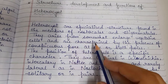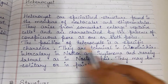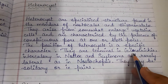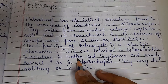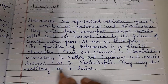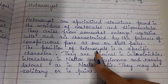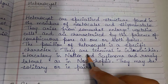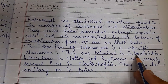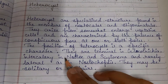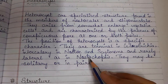The position of the heterocyst is a specific character. They are terminal in Gloeotrichia, intercalary in Nostoc and Scytonema, and lateral in Stigonema. The position is thus a distinguishing feature among different organisms.